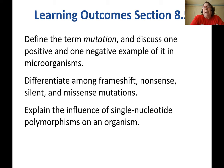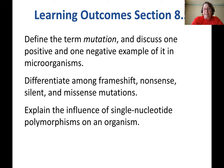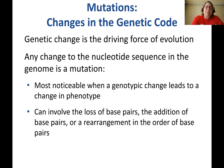The learning outcomes for section 8.5: we are going to define the term mutation and discuss an example of a positive and a negative mutation. We're going to differentiate between the types of mutations — things like frame shift, nonsense, silent, and missense mutations. We're going to explain the influences of single nucleotide polymorphisms, also called SNPs, on an organism.